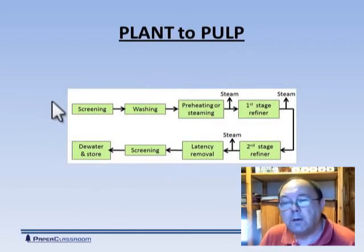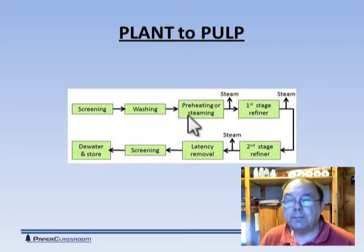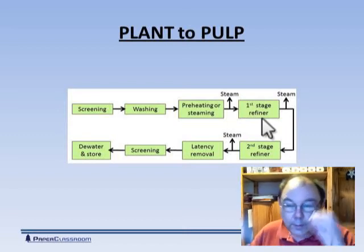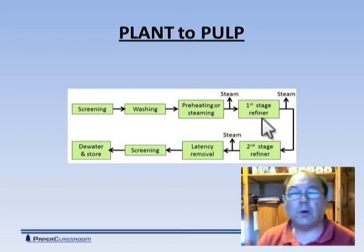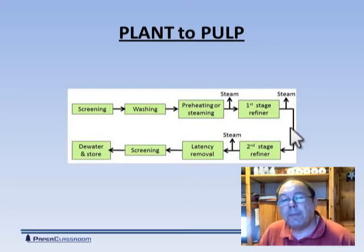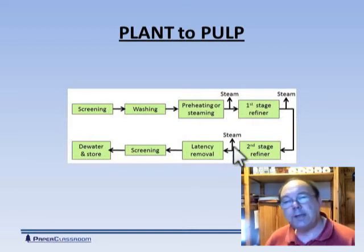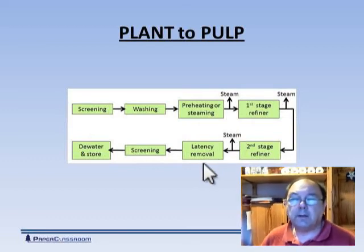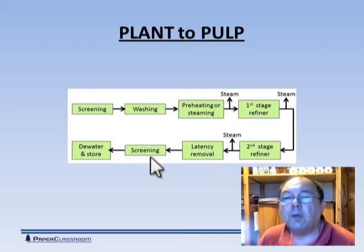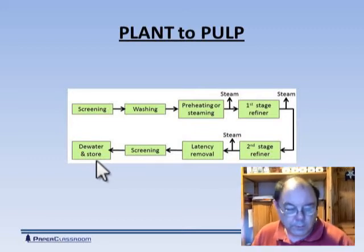Here's a schematic. We bring the chips in, pass them through screens to make sure they're the right size, wash them, preheat them, take off some excess steam, and put them through a refiner. The refiner generates lots of friction that causes heat, which causes the water to turn into steam — so we need to vent it before the equipment explodes — then pass it through a second refiner. More friction, more heat, more steam generated. We then pass it into a latency tank, do a final bit of screening to remove any chips not reduced to individual fibres, then dilute and store them ready for use.